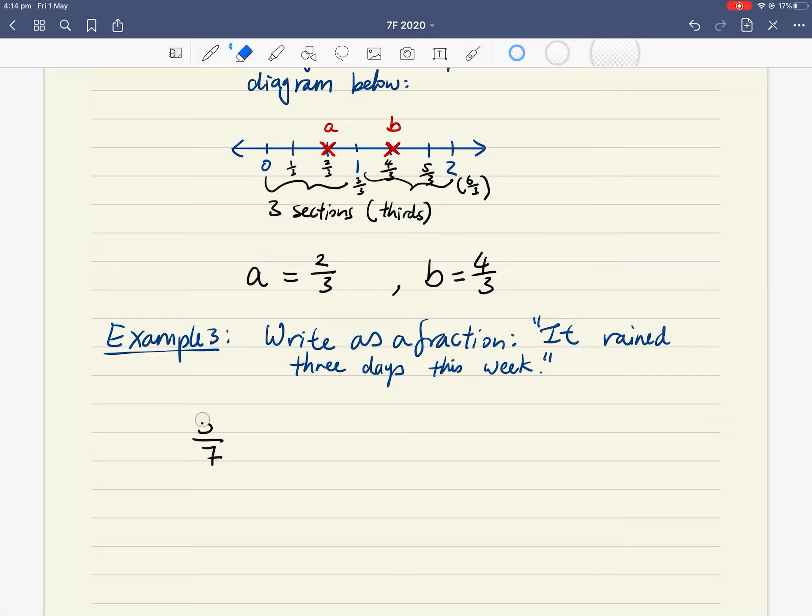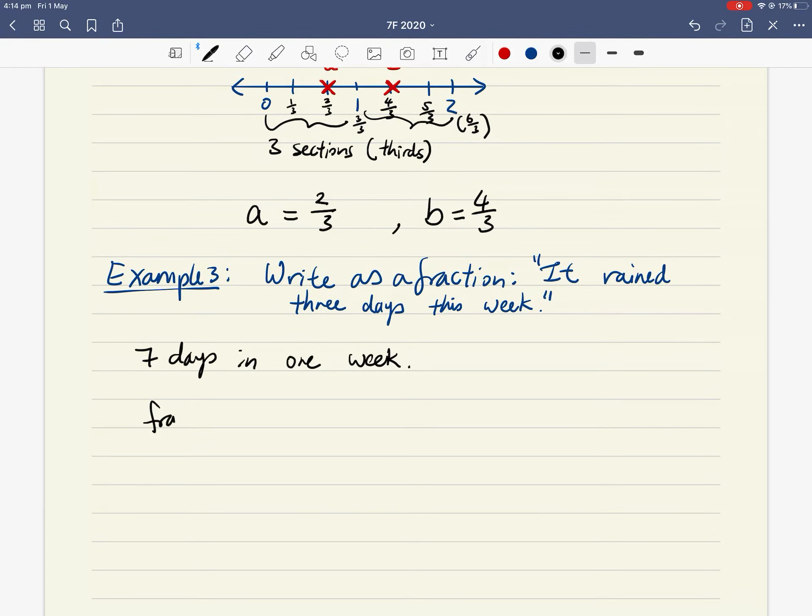So let's go back and improve our communication. Let's say seven days in one week, so fraction of rainy days equals three out of seven. Three, horizontal line, your vinculum, seven.